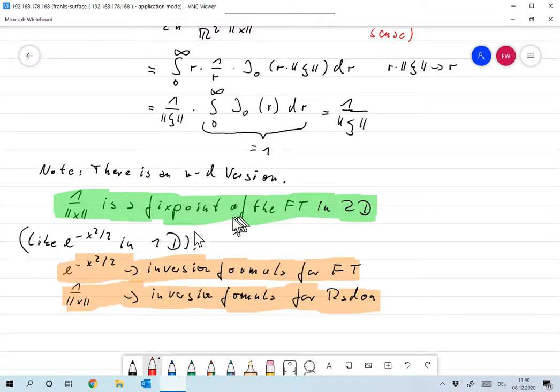But in 1D, there's of course also a fixed point for the Fourier transform. And that's e to the minus x squared over 2. We proved that. And the fact that e to the minus x squared over 2 is a fixed point leads to the inversion formula for the Fourier transform. That's the basis for that.